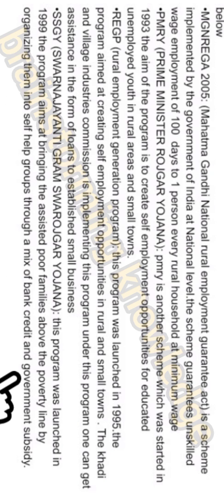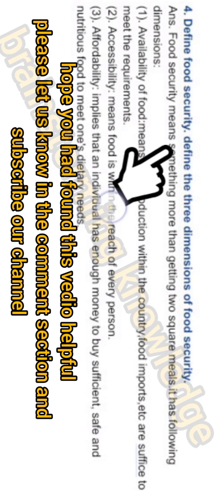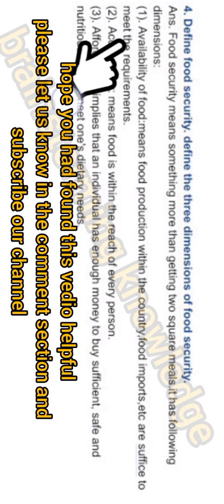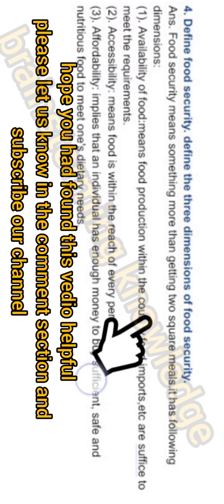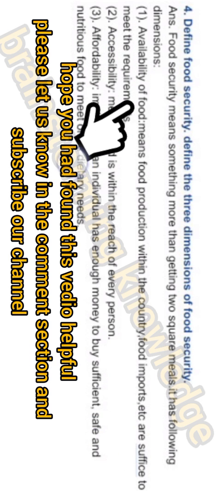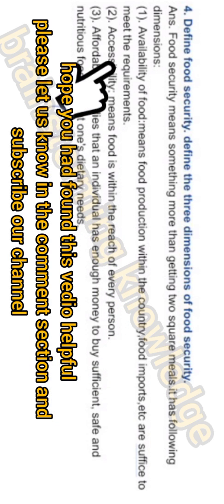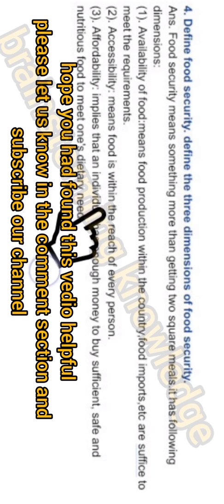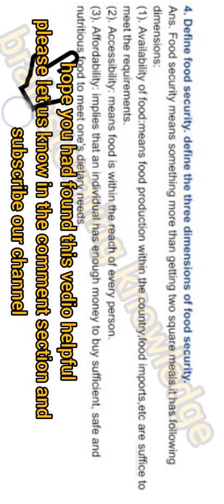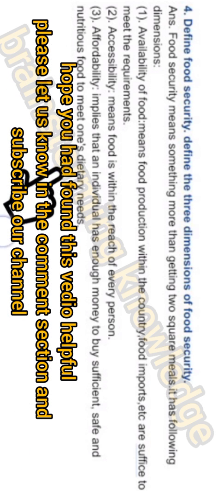Question four: Define food security and its three dimensions. Food security means more than just getting two square meals. Its three dimensions are: first, availability of food — meaning food production within the country plus imports are sufficient to meet requirements; second, accessibility — food is within reach of every person; third, affordability — an individual has enough money to buy sufficient, safe, and nutritious food to meet dietary needs.